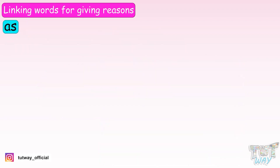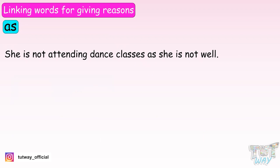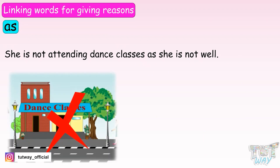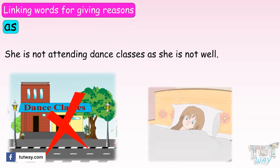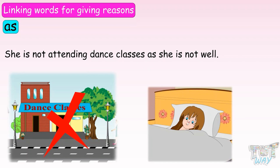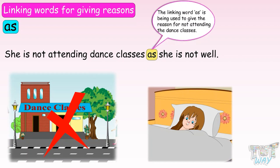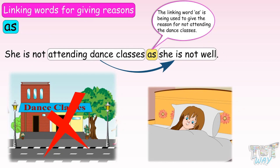'She is not attending dance classes as she is not well.' Here, the linking word 'as' is being used to give the reason for not attending dance classes.